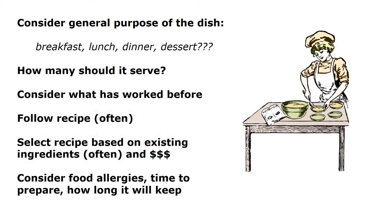I want to go deeper on the planning decisions that go into what you might actually cook for the dinner party. First, what's the purpose of the dish — is it for dinner, lunch, breakfast, or dessert? The role of a particular dish is part of the decision making process. How many it should serve would determine how much of any particular ingredient you might need.